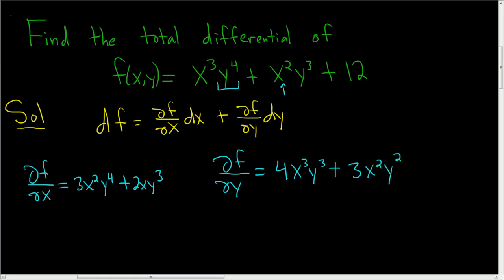And now we're ready to finish. So df is equal to, let's see, ∂f/∂x, that's this piece here. So we end up with (3x²y⁴ + 2xy³)dx,